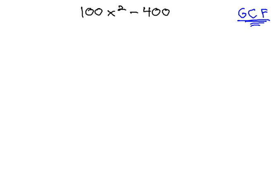In this problem, a common factor seems to jump out at us of 100. Factoring out the 100 leaves us with x squared minus 4.